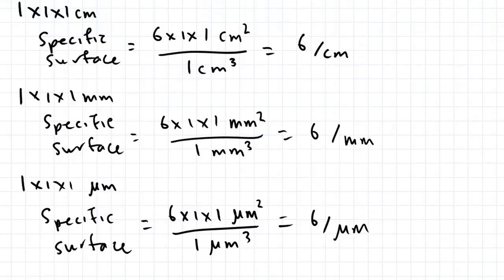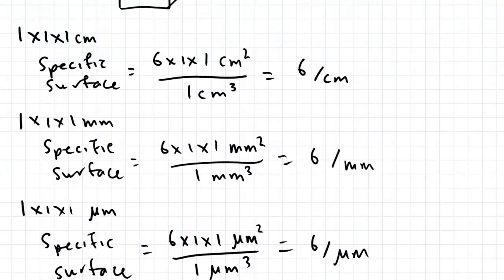If we convert all these specific surfaces into millimeters, the first works out to be 0.6 per millimeter, the second stays the same at 6 per millimeter, and the third works out to be 6,000 per millimeter. You can see that large particles have a smaller specific surface compared to smaller particles.